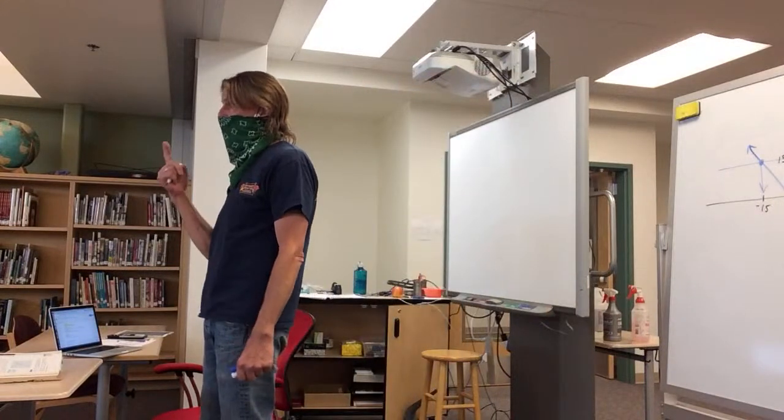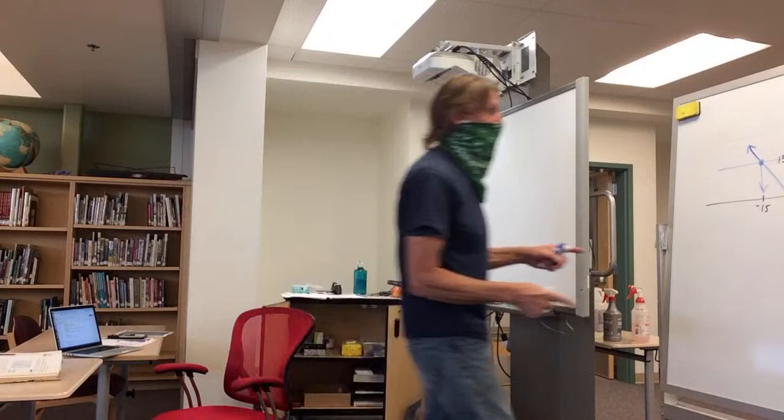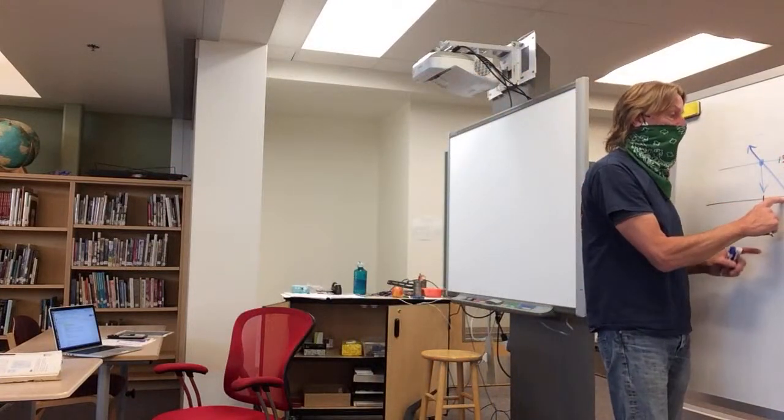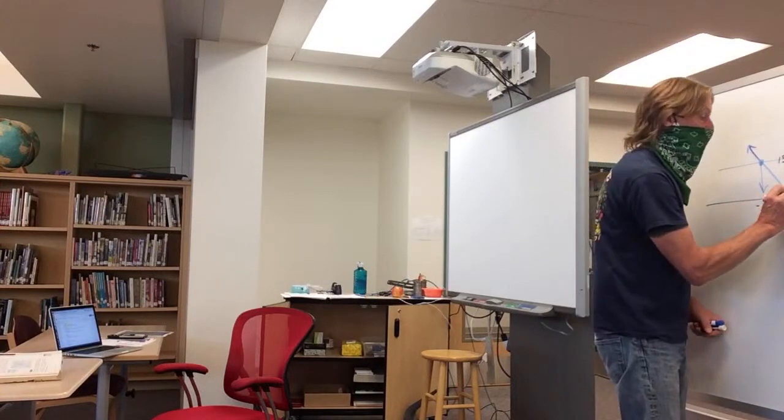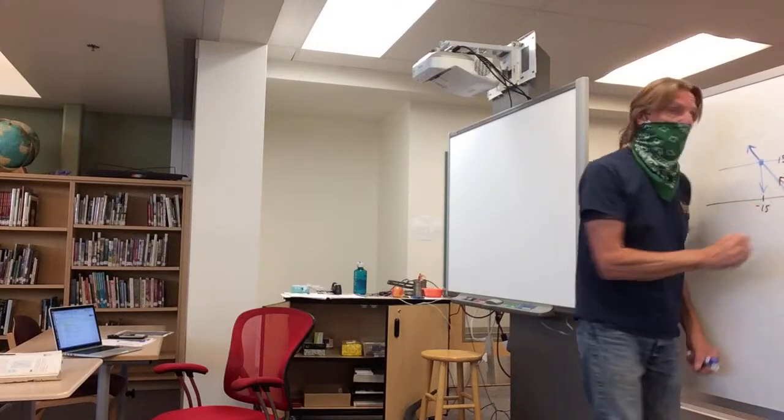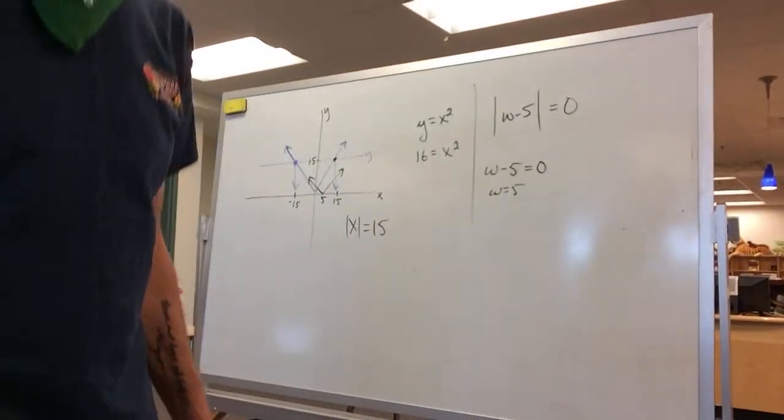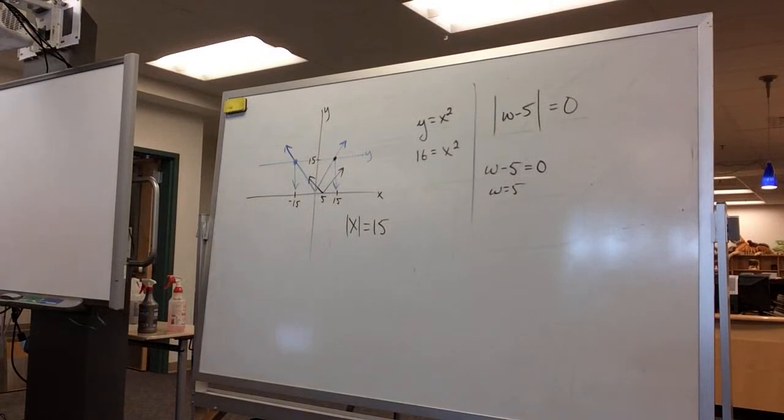That one only has one solution. The reason is this little point right here when it gets graphed lands over here at positive 5. So that graph looks like this at positive 5.